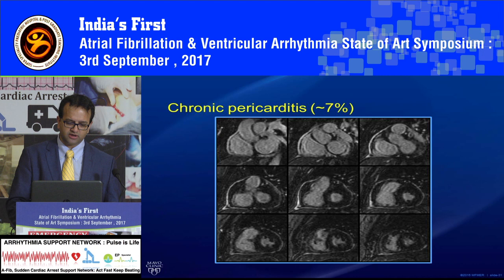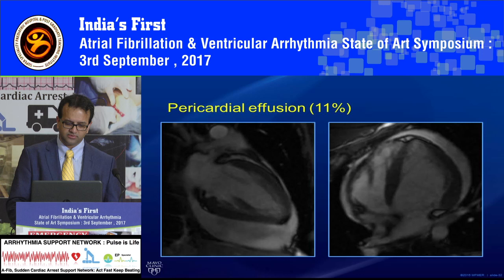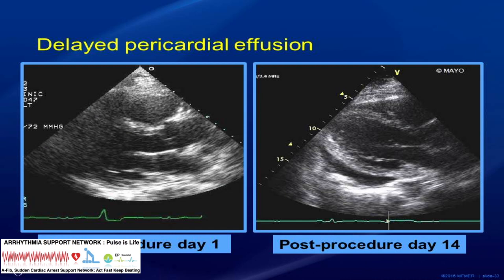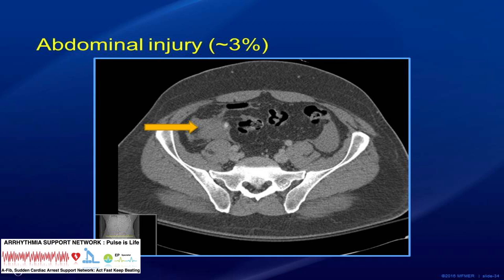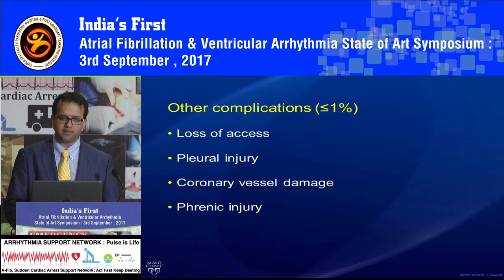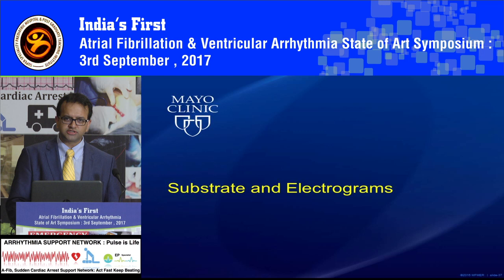Some patients may also develop delayed effusion and tamponade. This example from a recent patient shows layered thrombus — organized effusion can develop even on post-procedure day 14, likely from bleeding of smaller epicardial vessels. Abdominal injury can occur, particularly in patients with hernia, epigastric hernia, or Chagas disease with giant megacolon. Liver injury is also possible, as are pneumothorax, coronary artery damage, and phrenic nerve injury.